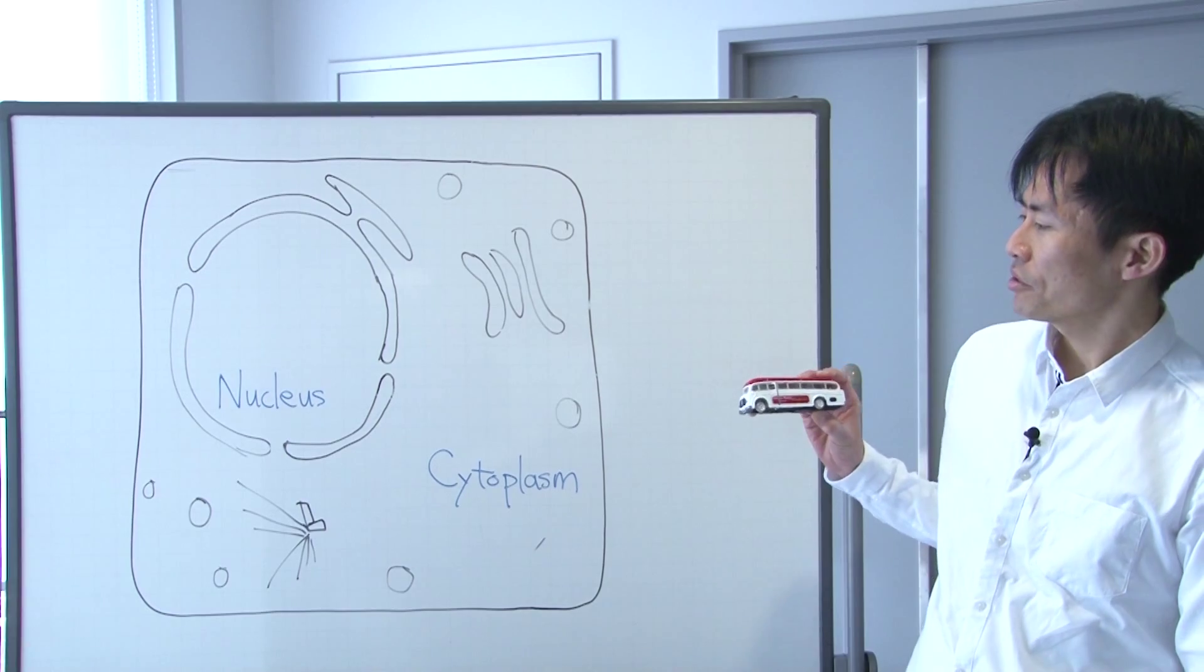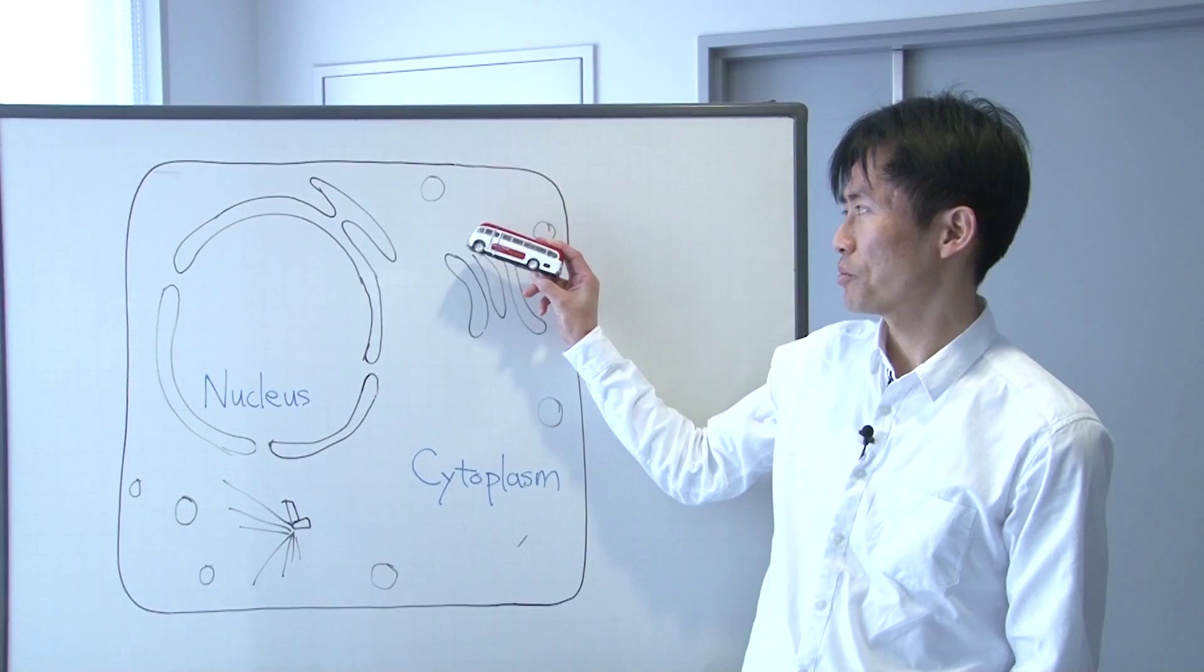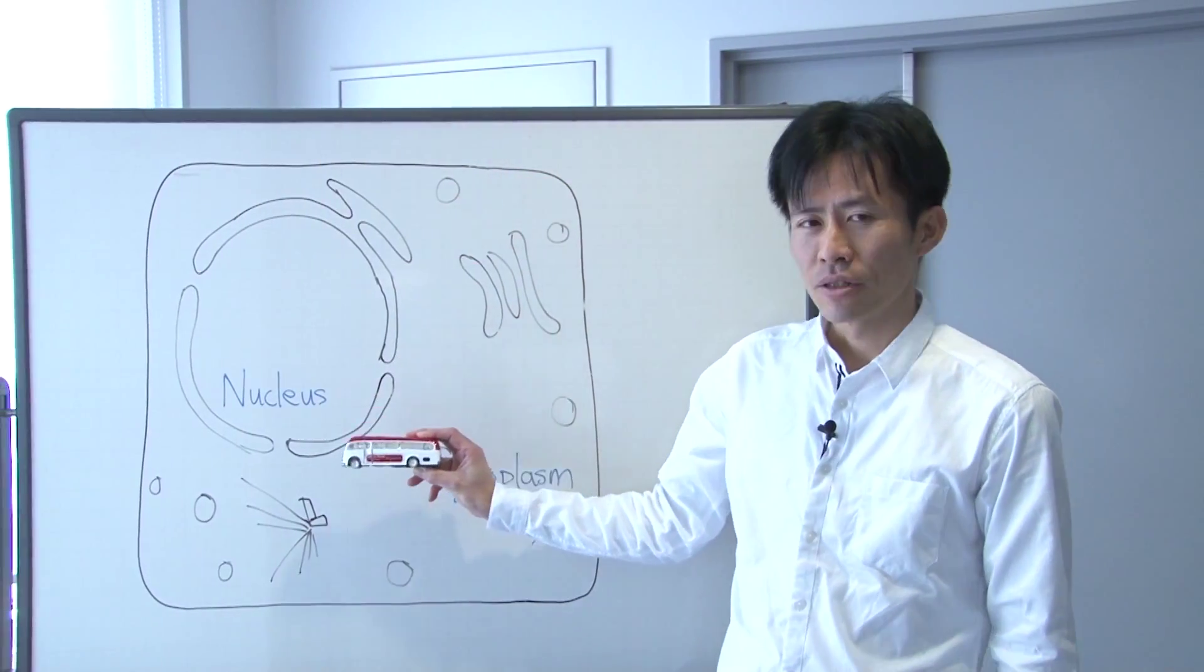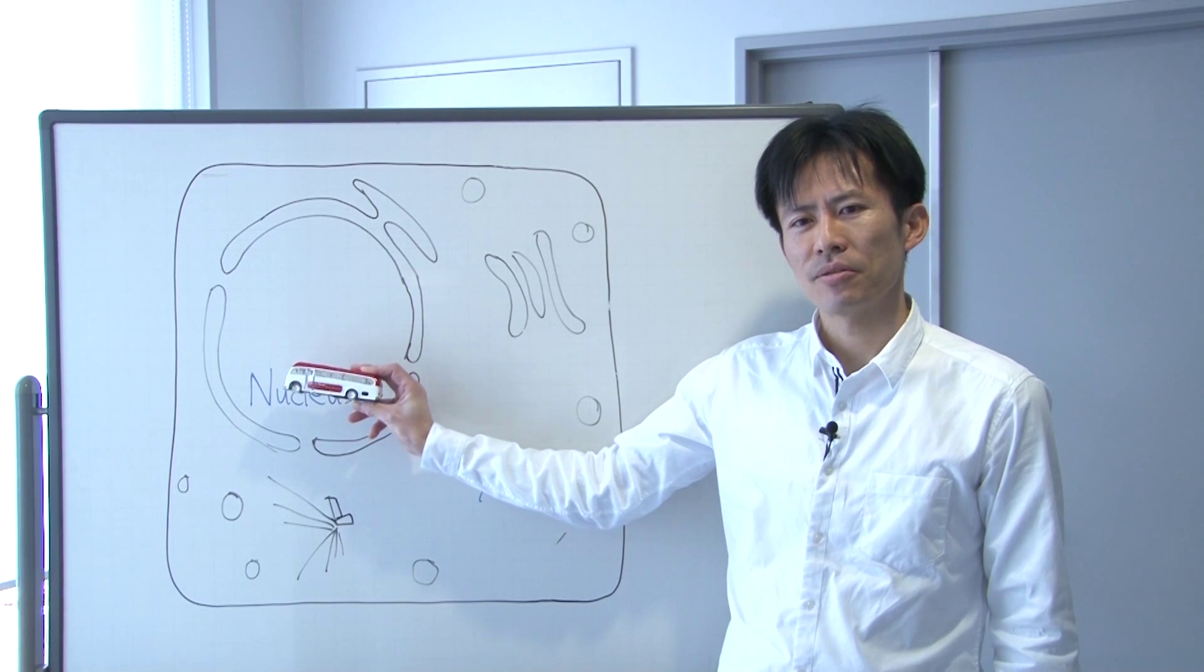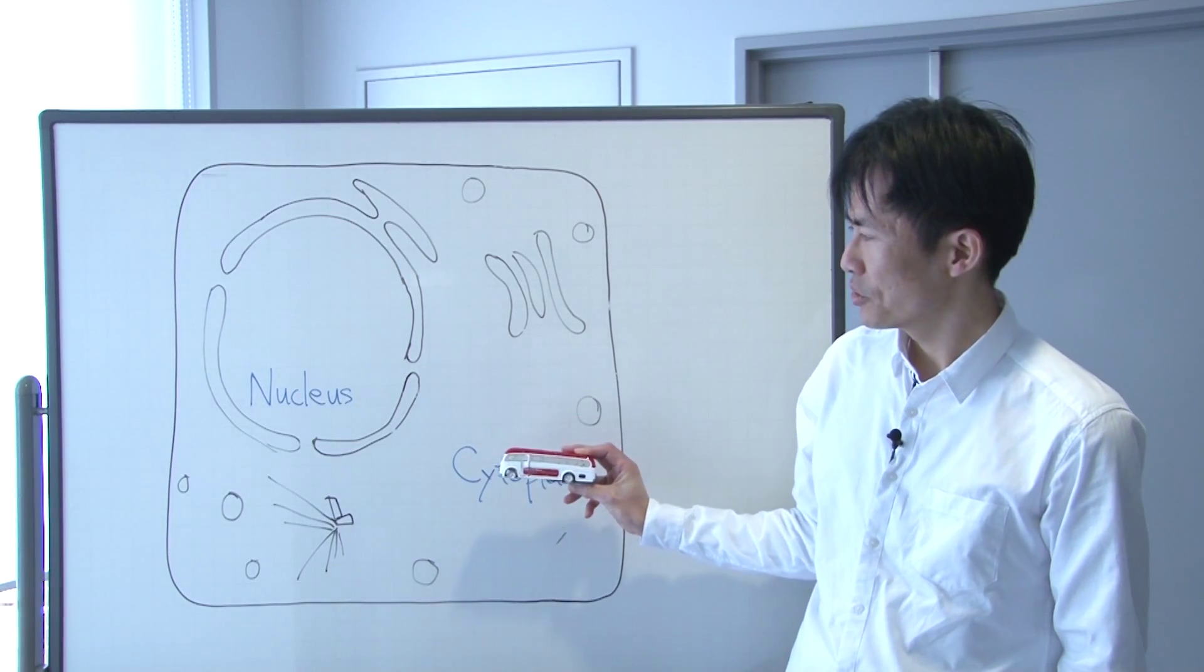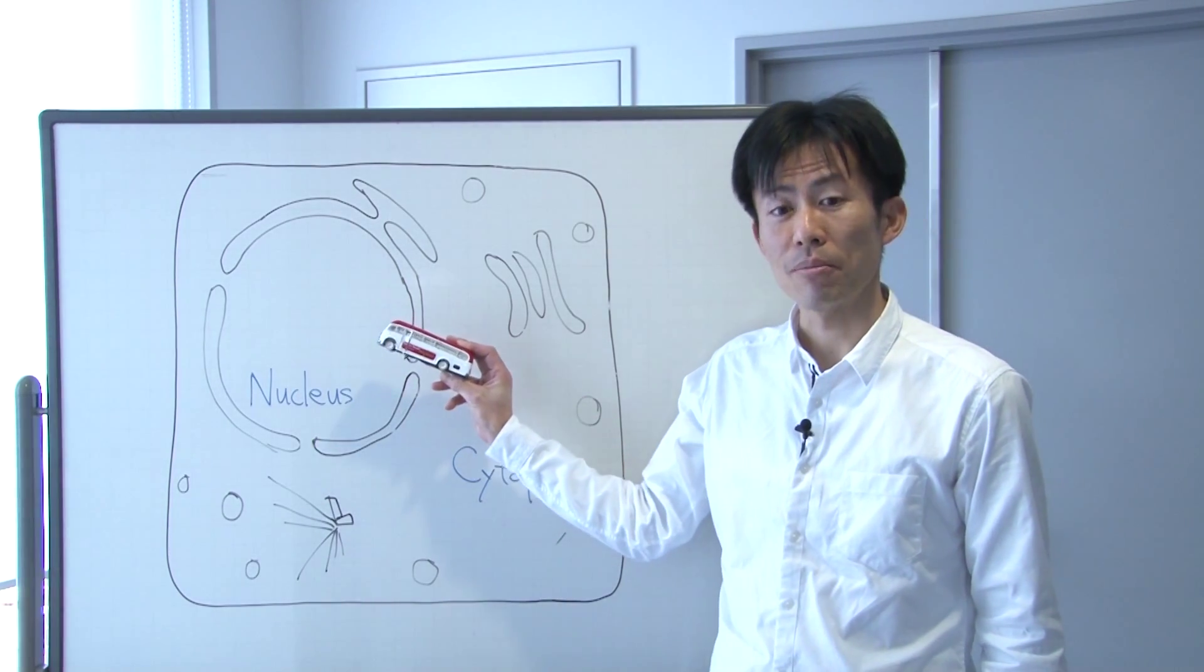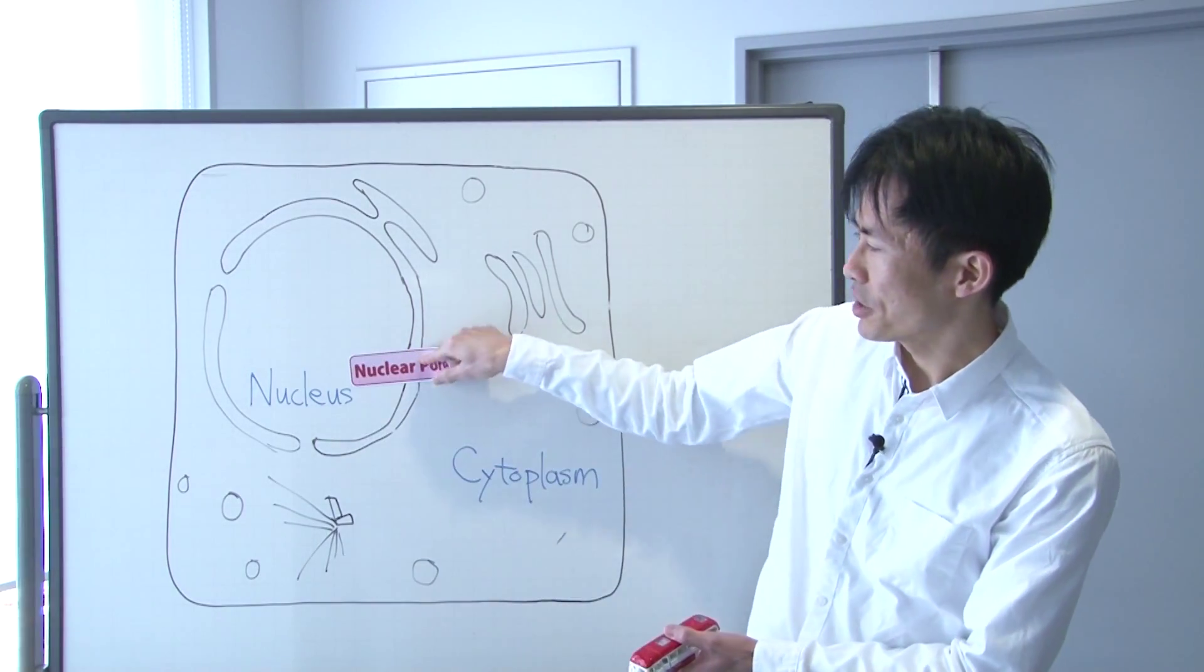All proteins are synthesized in the cytoplasm and then delivered to the place where they function. The proteins which work in the nucleus, such as transcription factors, chromosomal proteins, and splicing factors, have to be delivered into the nucleus through a pore in the nuclear envelope called nuclear pore complex.